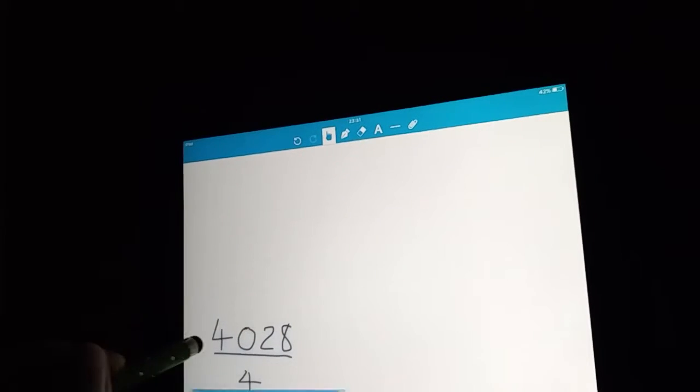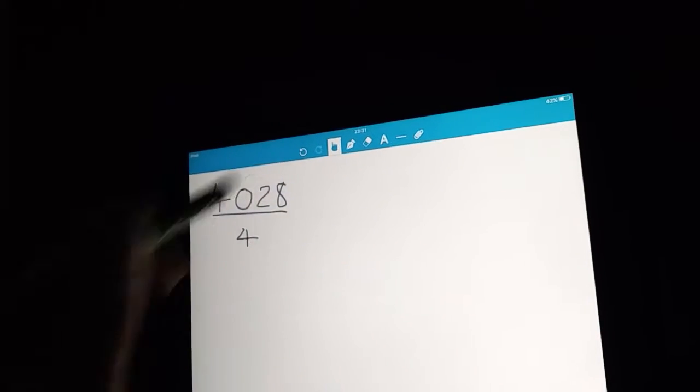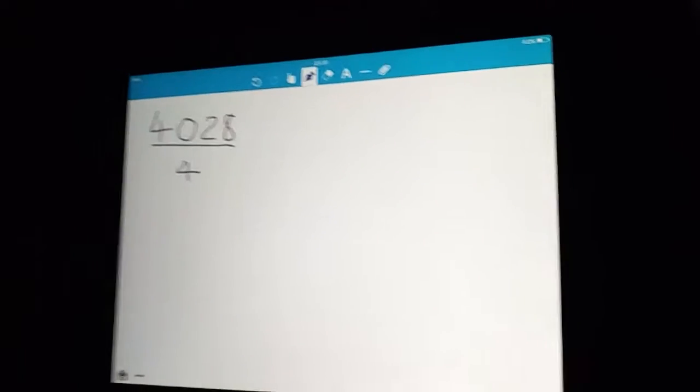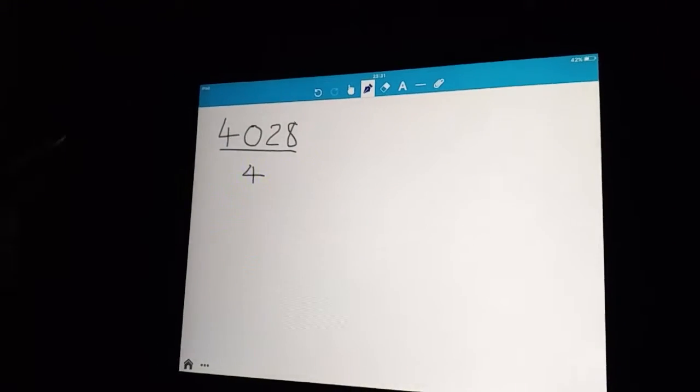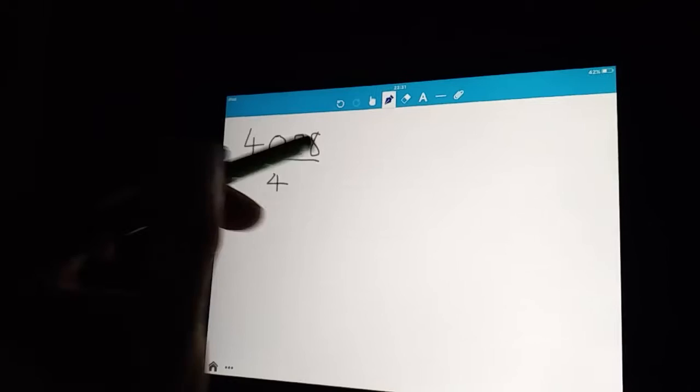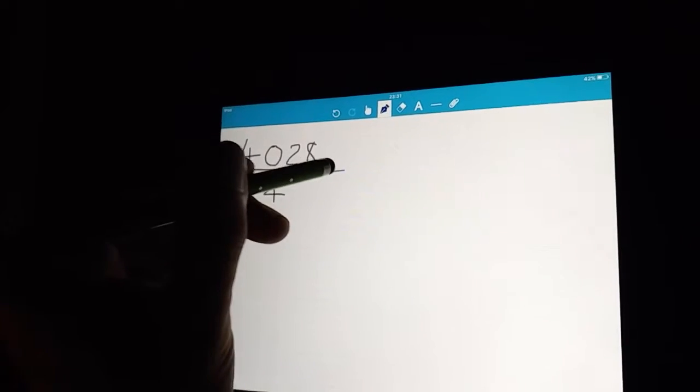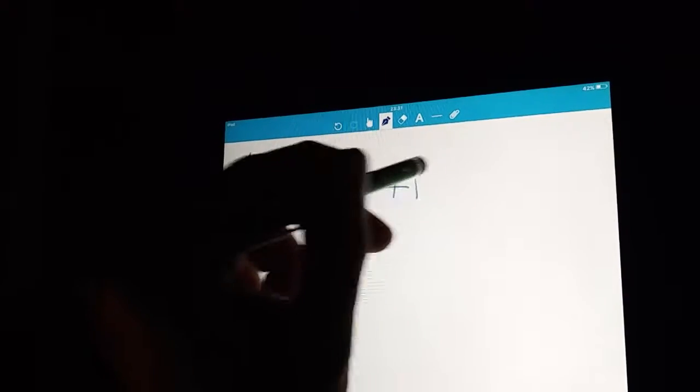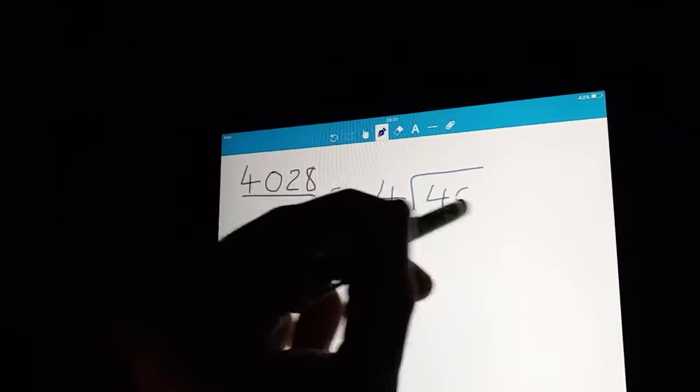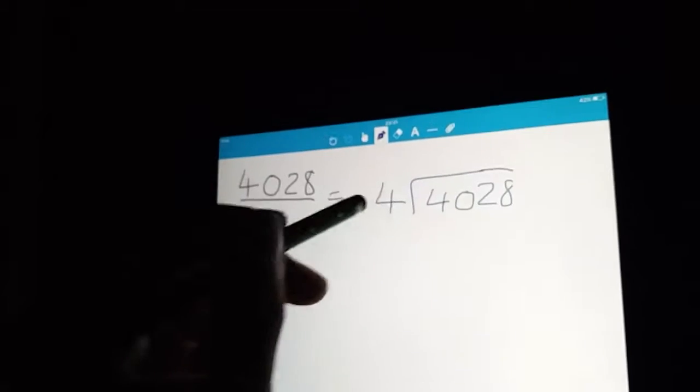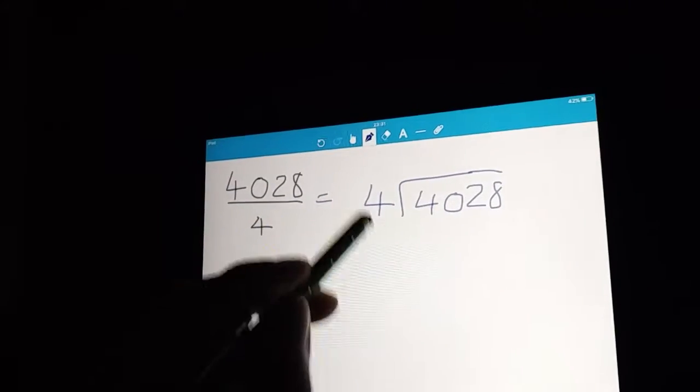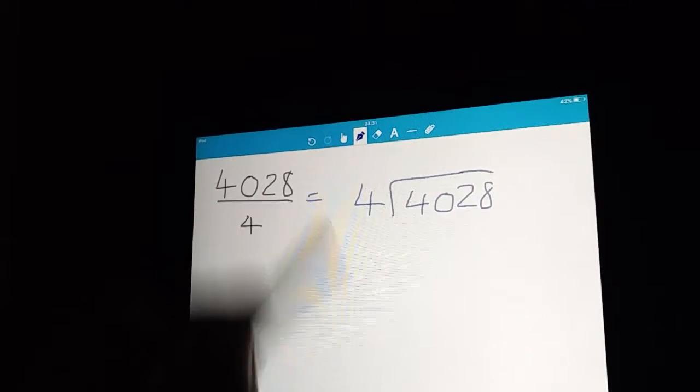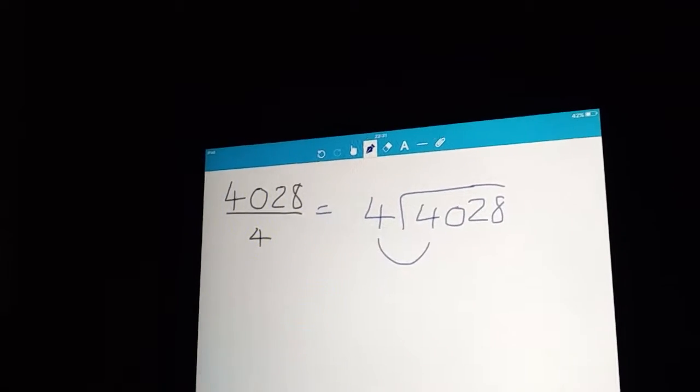So we just apply that same idea to a slightly harder example. I've got a much bigger number now on the top, and still the same sort of small number. So again, how many 4s go into 4,028? Without using a calculator, we have to use the bus stop method. It's exactly the same fashion. We still have to just go along the number and divide the 4 into each of the individual digits.